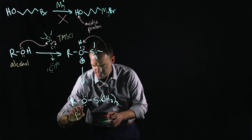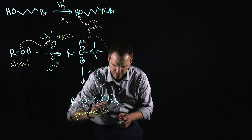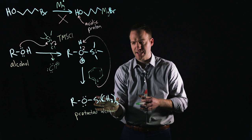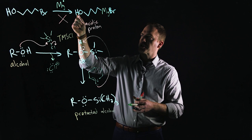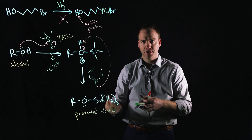This is what we call a protected alcohol. We call it a protected alcohol because this group, the trimethylsilyl, is blocking the position where our acidic proton was. Remember, I can't run this reaction because of that proton, so I've just taken its place with the TMS group.